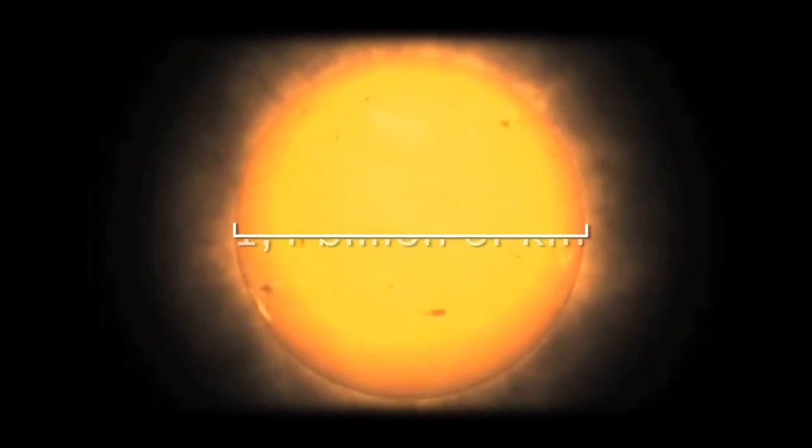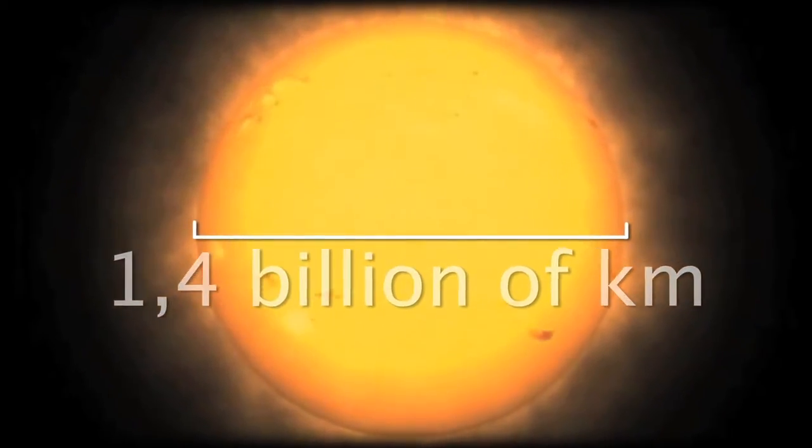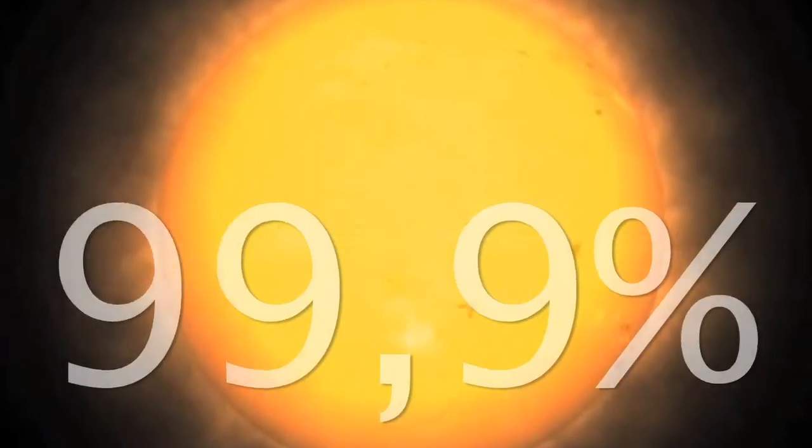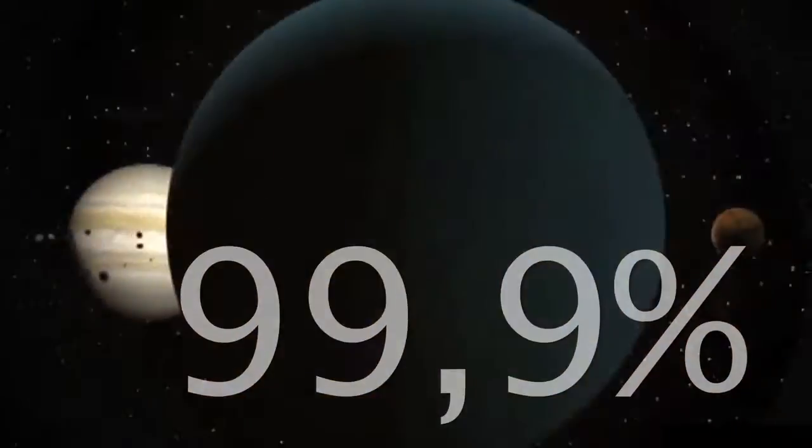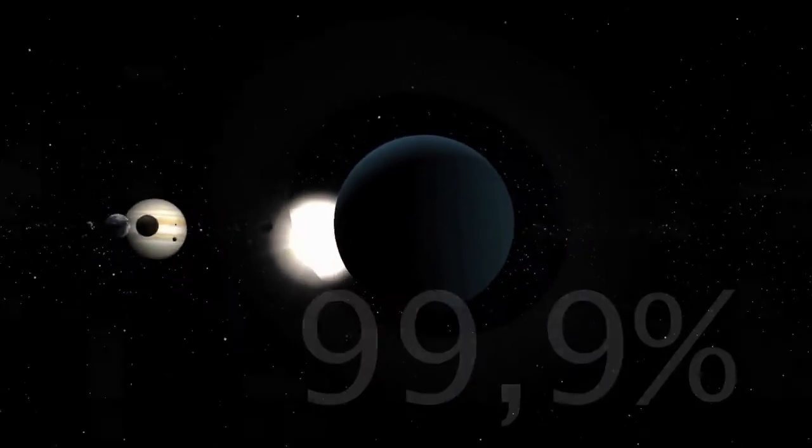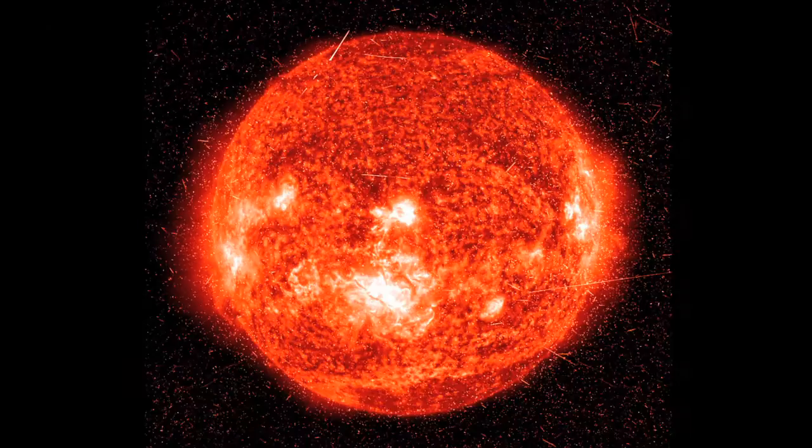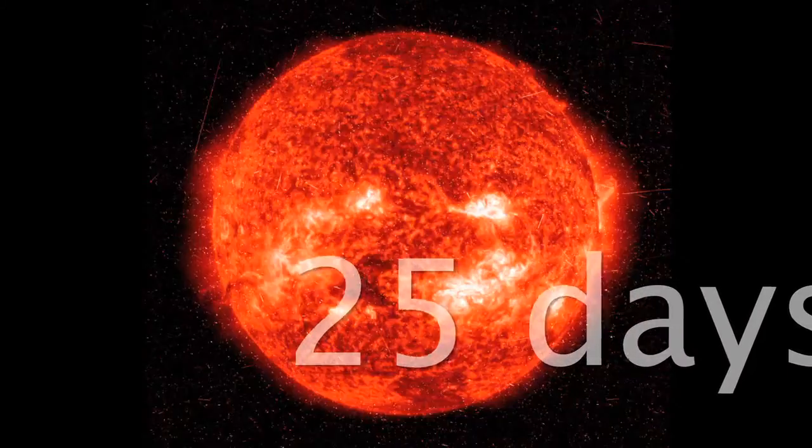This gigantic sphere of gas of 1.4 billion km in diameter represents on its own 99.9% of the mass of the whole solar system. The Sun does one full rotation in 25 days at the equator.